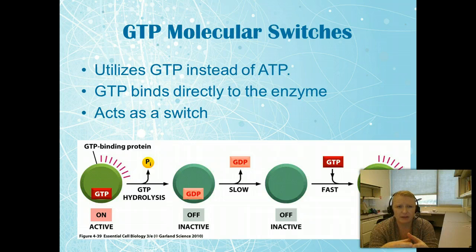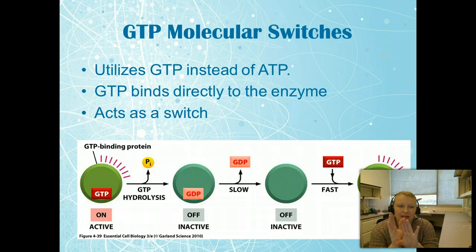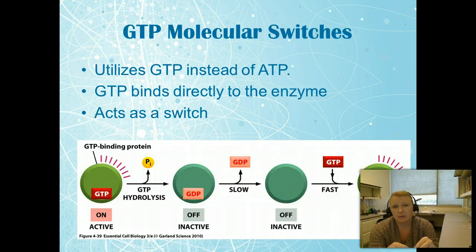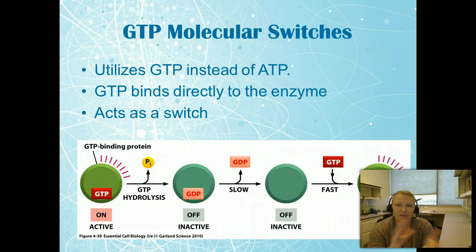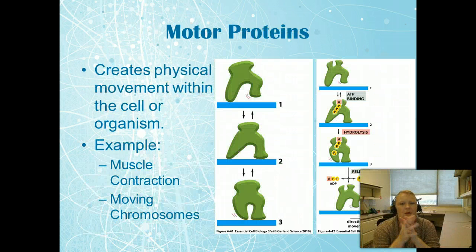GTP molecular switches are similar to phosphorylation but use GTP instead of ATP. GTP binds directly to the enzyme — rather than a kinase transferring the group — and acts as a switch. When GTP is bound, the enzyme is active; once the GTP comes off, it's inactive. GTP is slightly different from ATP phosphorylation but operates on a similar idea.